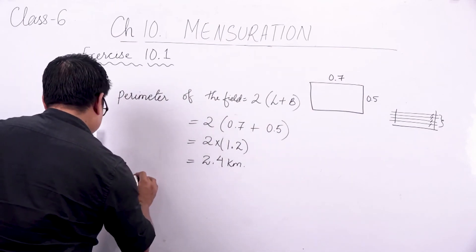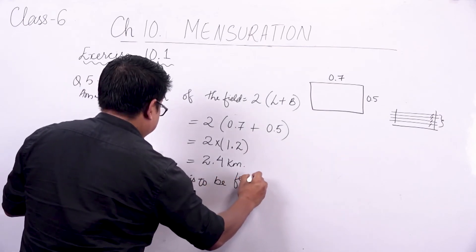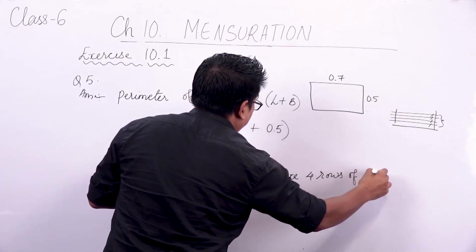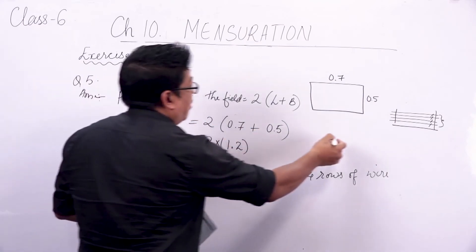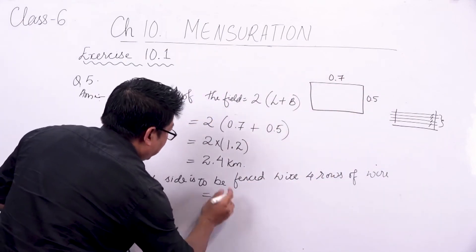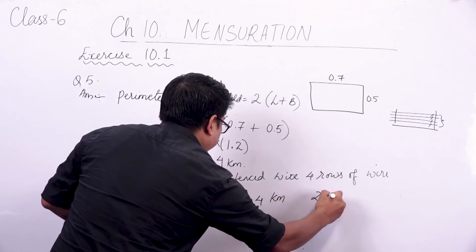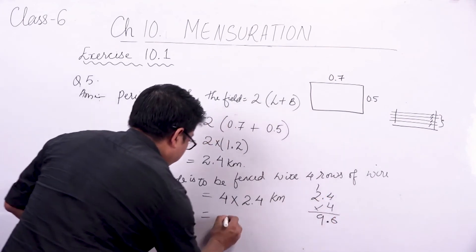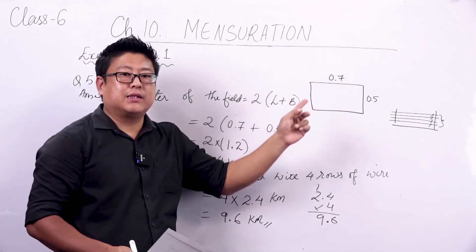Therefore, each side is to be fenced with 4 rows of wire, which means the wire goes around 4 times. So we multiply 2.4 into 4. 4 into 4 is 16, carry 1; 4 into 2 is 8, plus 1 is 9, with one decimal place. So you will require 9.6 kilometers of wire to run the fencing around this land 4 times.